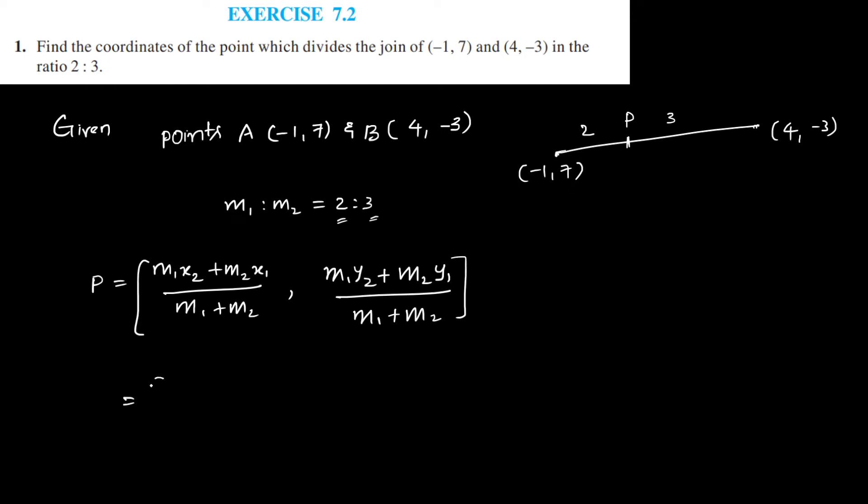2 into X2, so it is X1Y1, it will be X2Y2, so 2 into X2 is 4. Always remember the ratio should be taken as M1 and M2. The first point is X1Y1, second point is X2Y2. Now we should replace in the formula.